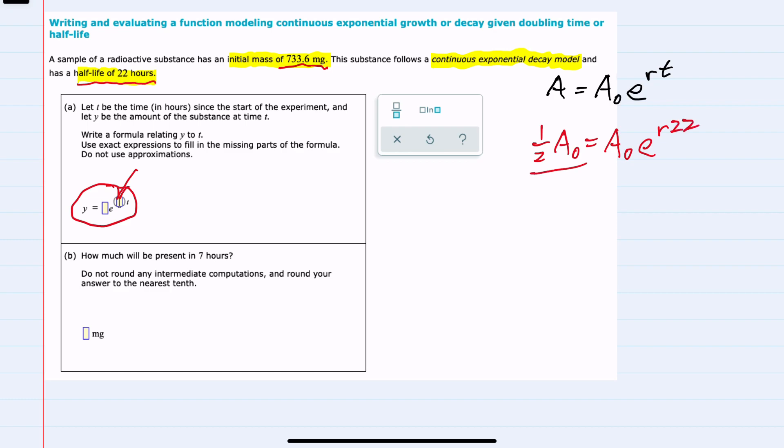From here, we can simplify by dividing both sides by a zero. We now have one-half on the left-hand side equals e to the 22r. And from here, I need to solve for r, and since it's in the exponent, I can move it down out of the exponent by taking the log of both sides.